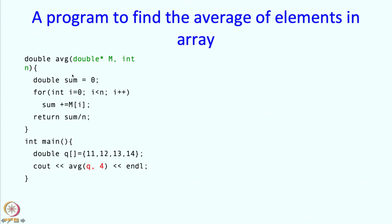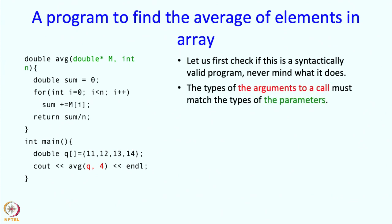Before looking at it too carefully and trying to see how it executes, let us first make some preliminary checks. Let us first check if this is a syntactically valid program, never mind what it does. When we make a function call, the types of the arguments must match the types of the parameters to the function. Is that happening here?